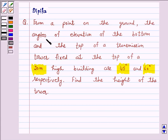From a point on the ground, the angles of elevation of the bottom and the top of a transmission tower fixed at the top of a 20 meter high building are 45 degrees and 60 degrees respectively. Find the height of the tower.